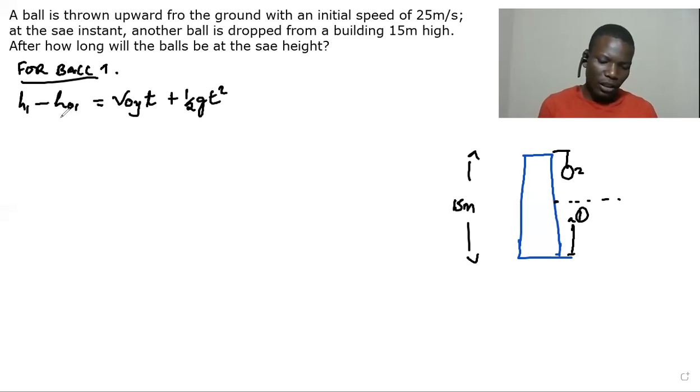So initial height, we'll take this as origin, the ground, so it is zero. So we have h1. We have the initial velocity is 25 meters and then we have times time. Then this is thrown up, so the gravitational acceleration in this case is going to be negative. So we have minus half times 9.81 t squared.